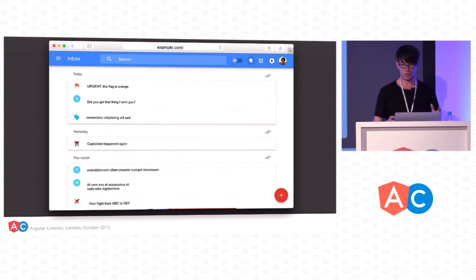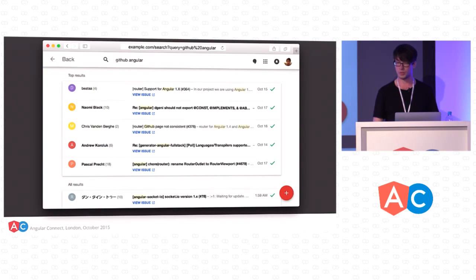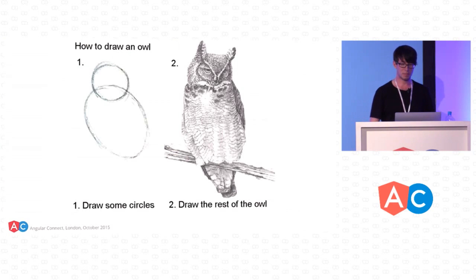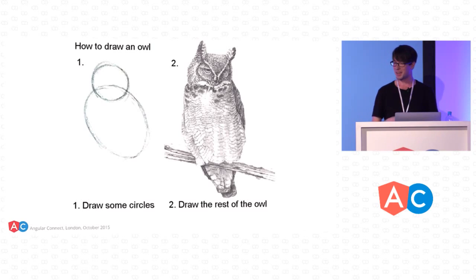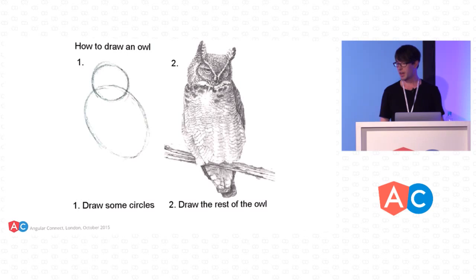We've shown all the different things. So now in our app, if you go to example.com you see the index, and if you go to email 1234 you see this, and if you go to search with query equals GitHub Angular, you see something like this. I guess my explanations are sort of like this explanation of how to draw an owl. Routing is sort of the drawing-the-circles part — I'm not really going to go into how you implement individual components. That's what the rest of the talks at this conference are about. But don't worry, someone else will teach you how to draw the rest of that owl.